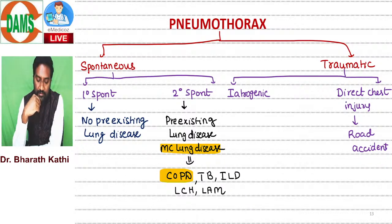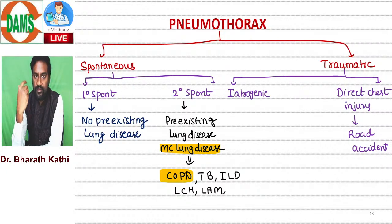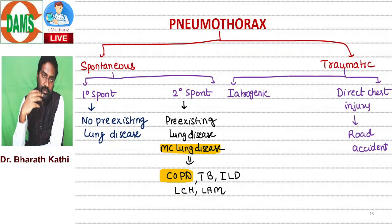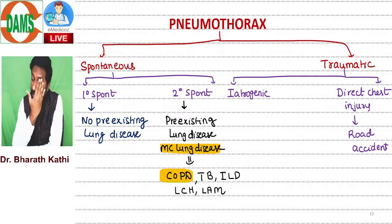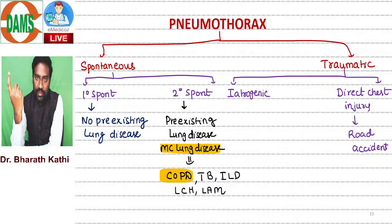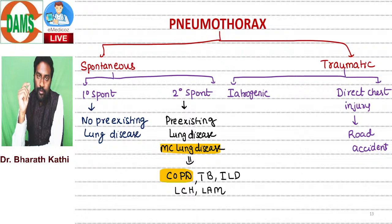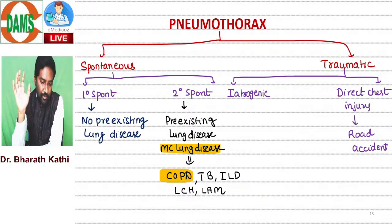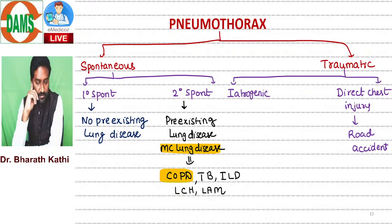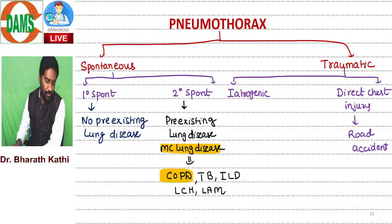Other lung diseases causing secondary spontaneous pneumothorax include Langerhans cell histiocytosis, LAM (lymphangioleiomyomatosis) which contains cysts that can rupture, tuberculosis which contains cavities that can rupture into the pleural space, and ILD (interstitial lung disease) which has honeycombing areas - also abnormal air-filled areas that can rupture at any point of time resulting in pneumothorax.